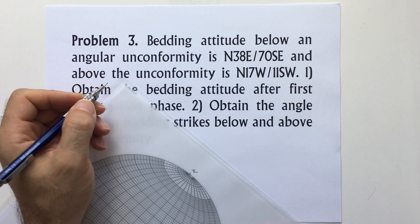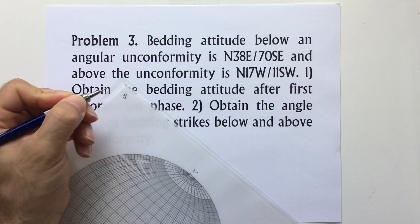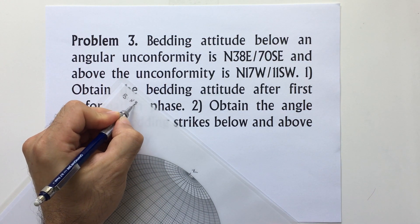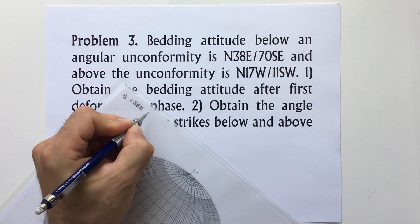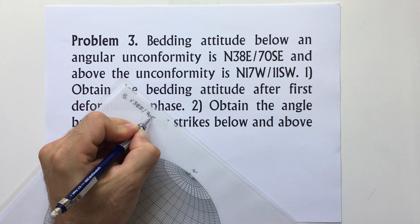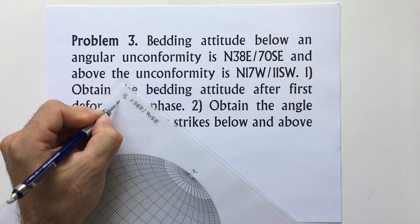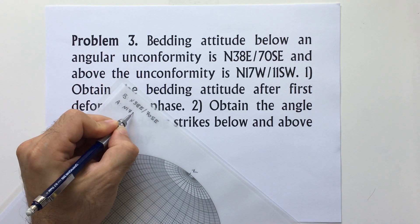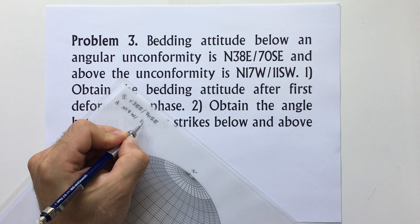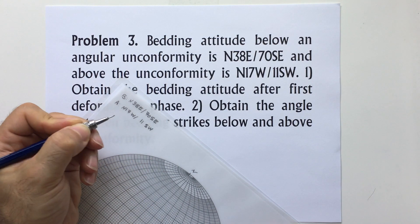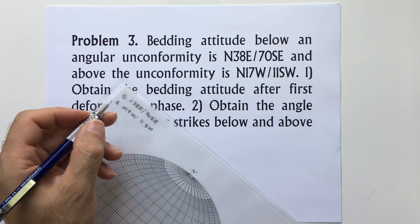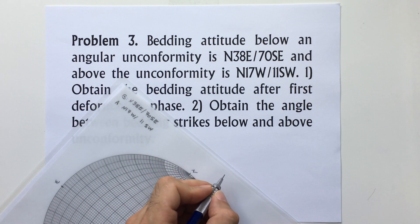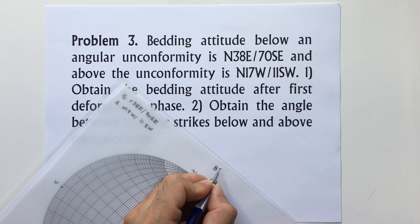Below unconformity is north 38 east 70 southeast, and above the unconformity is north 17 west 11 southwest. It's asking about the bedding attitude after the first phase of tectonic, let's call that one B prime.